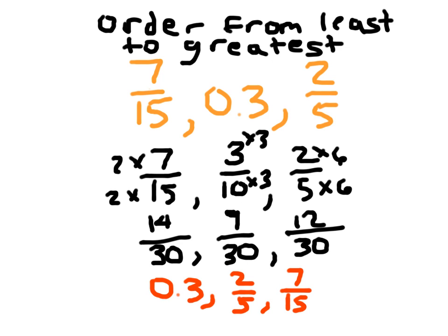I could have gotten to the same answer if I had approximated the decimal form of 7 fifteenths as 0.466, and then with 0.3 and 0.4 I'd know the order. But it wasn't that easy to figure out 7 fifteenths — I actually pulled up a calculator to figure it out.